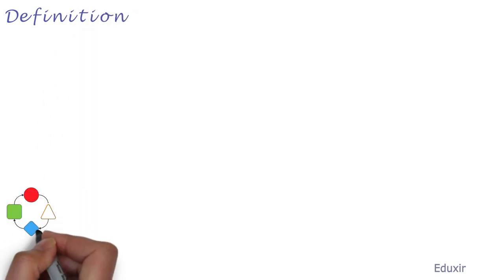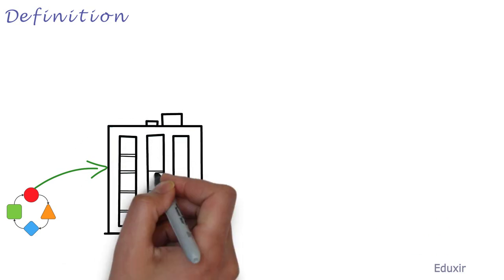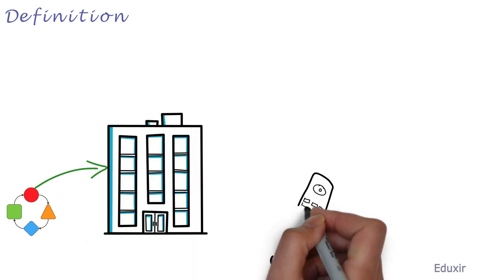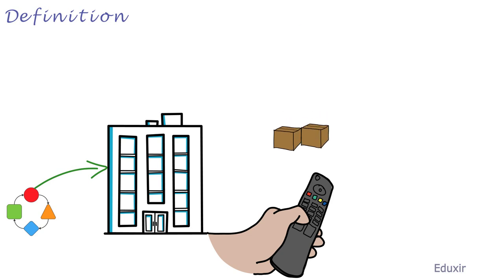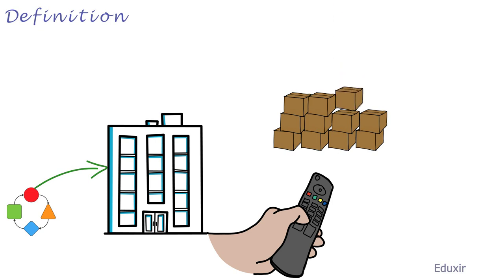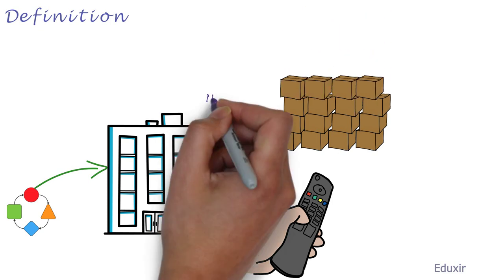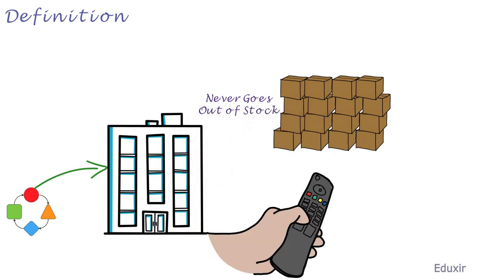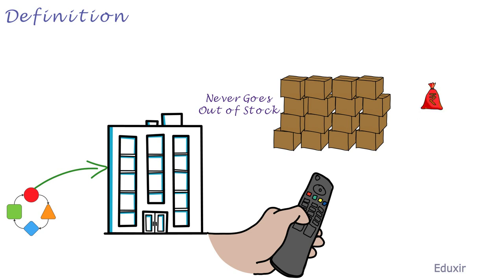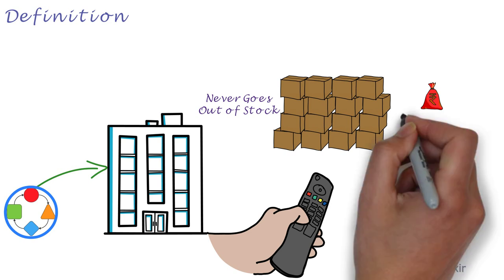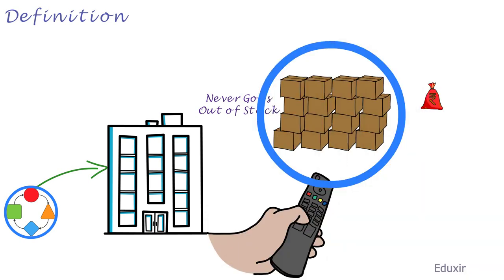Inventory Control is a system that enables the business to control the inventory of items so that they are never out of stock, while ensuring that the cost of maintaining the inventory is lowest. In other words, Inventory Control is a system that ensures that the items are always in stock while consuming the lowest possible cost. The Inventory Control System serves the following objectives.